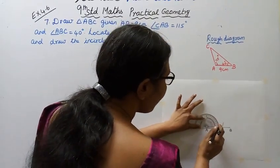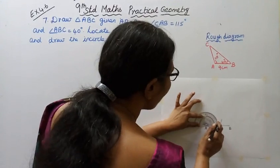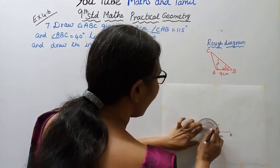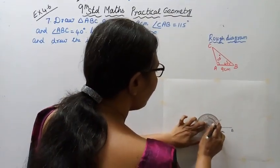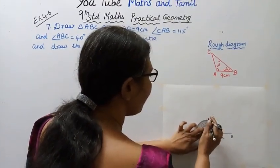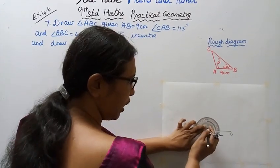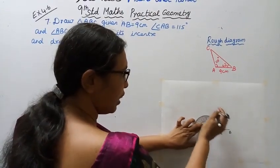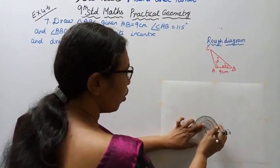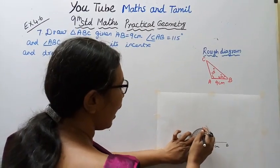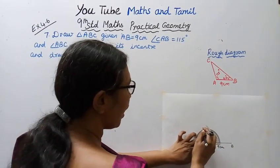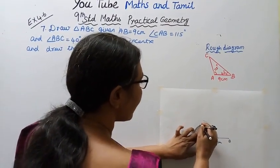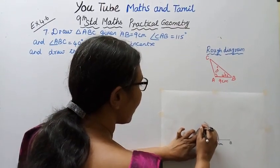Mark the angle at A as 115 degrees. Fix the compass at zero and measure 115 degrees carefully. Confirm the reading is 115 degrees and fix it in place.